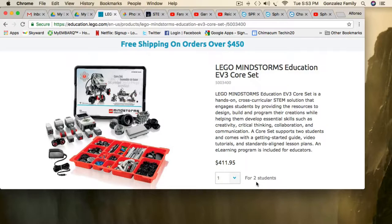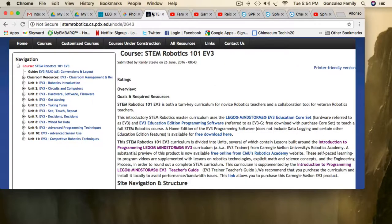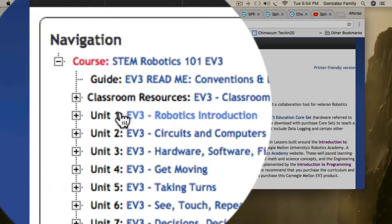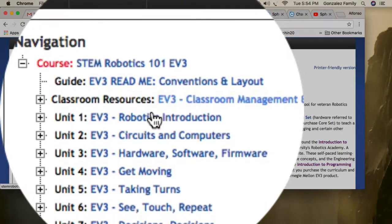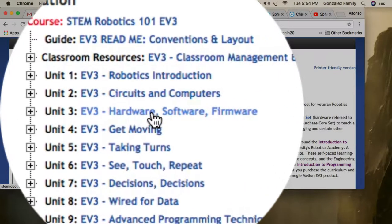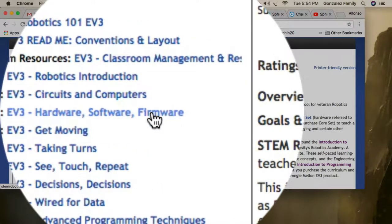And if you can only get one or two because of the price, having it as a center where kids rotate through it could work too. But take that with this STEM Robotics 101 course that's completely free and choose the one for the EV3. You can see here these are all the units that are already created for teachers to pick and choose from. Depending on the course you're teaching and how much you want to go into actual robotics and circuits and hardware or software and firmware, you could go that route.